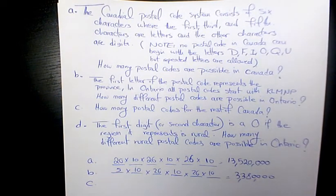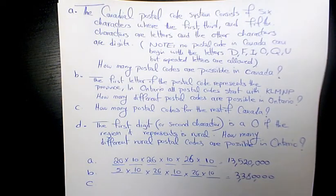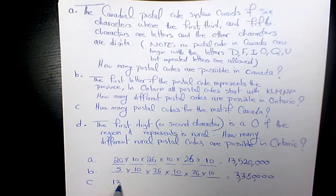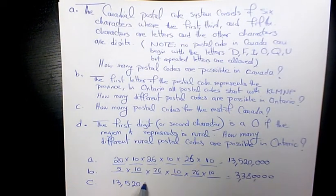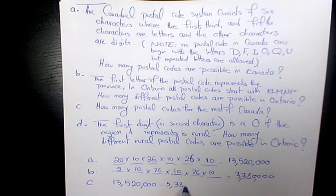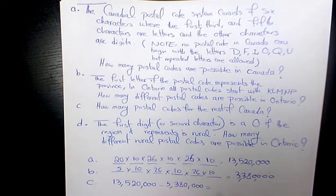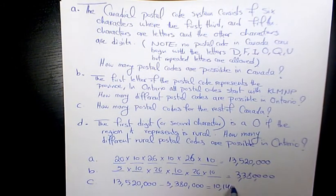Part C, how many postal codes for the rest of Canada? So it means that we just need to subtract these two numbers. So it's going to be 13,520,000 minus 3,380,000. The answer is going to be 10,140,000.